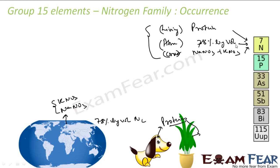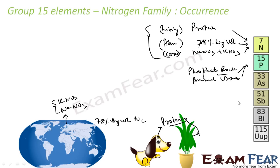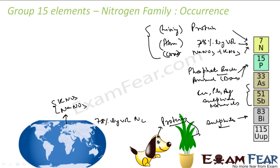If we talk about phosphorus, it occurs in phosphate rock and also in animals and plants in the form of bones — that's why you say 'you have weak bones, take more phosphorus.' For arsenic and antimony, these occur in sulfide minerals of copper and lead. Bismuth also occurs as sulfides. This is the occurrence of the nitrogen family.